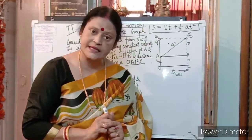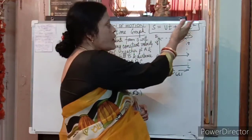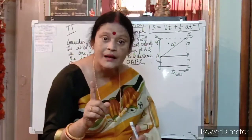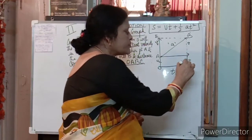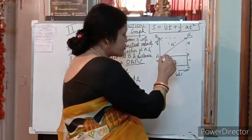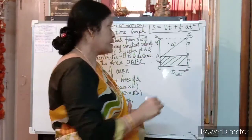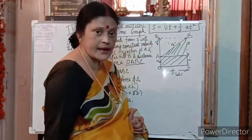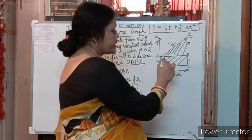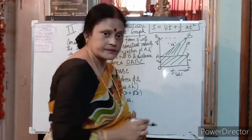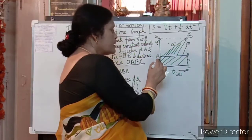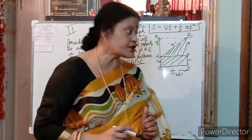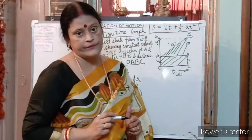Distance or time ke saath us ko relate kareenge. First to usne yaha se yaha tak ka distance cover kara. Yeh humara kya part ban gaya? Rectangular part. Ek distance usne pehle cover kara and then next distance reaches to point B. This is the triangular part when he accelerates its body. Jab usne acceleration kari to usne itna distance aur cover kara.